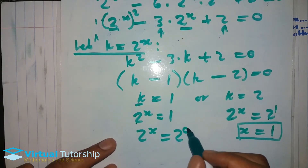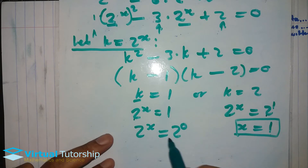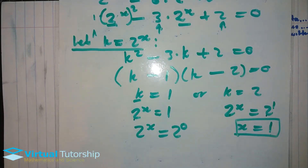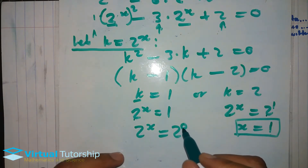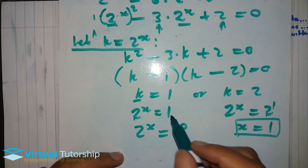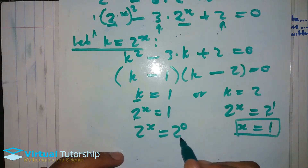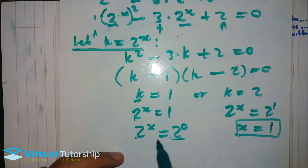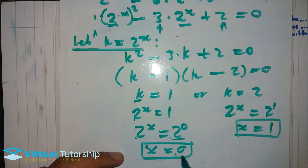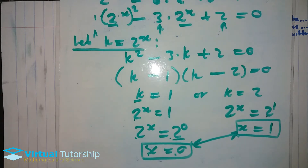So substitute back: 2 exponent x equals 1 — we can rewrite 1 as 2 exponent 0 — so by the one-to-one ratio, x equals 0. And for the other solution: 2 exponent x equals 2 exponent 1, so x equals 1. So we have two solutions.